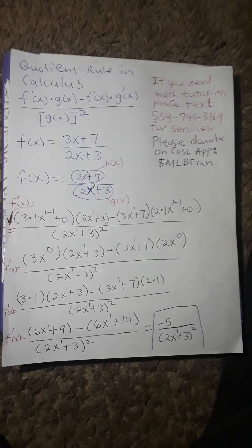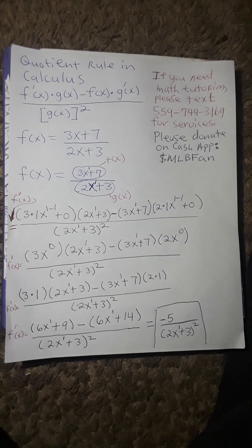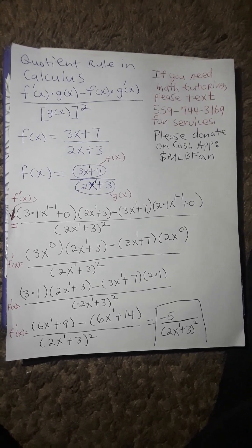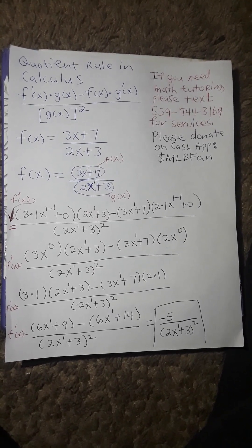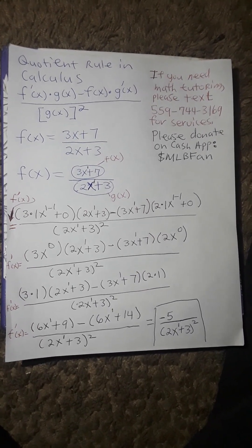Here's the function: f of x equals 3x plus 7 divided by 2x plus 3. Notice the same function is written below, identifying which part is f of x and which part is g of x.